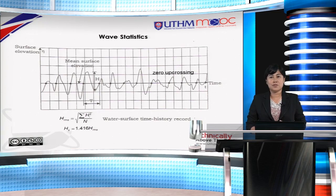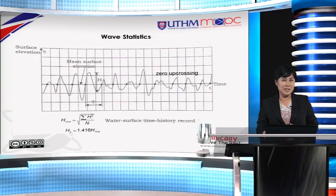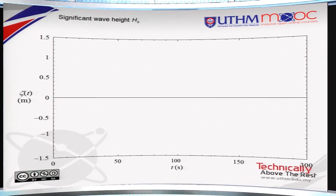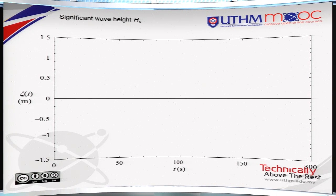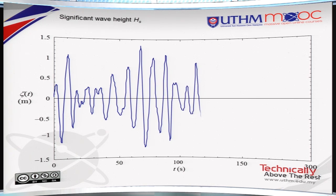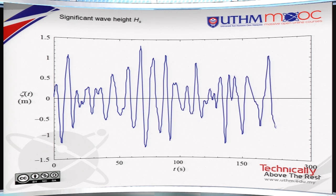One way is through zero-up-crossing method. Say, we have a time series with surface elevation record. Let's look at this surface profile. Once it goes zero-up-crossing the mean surface elevation, then you mark it.